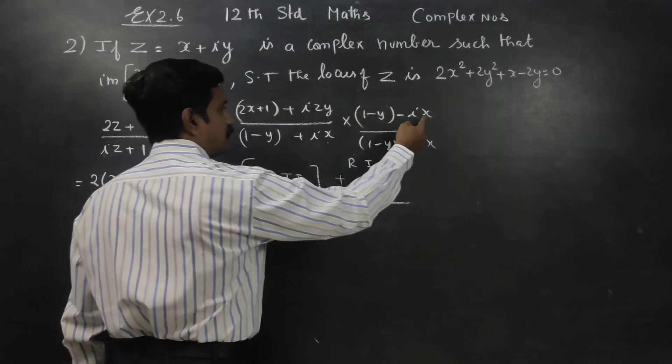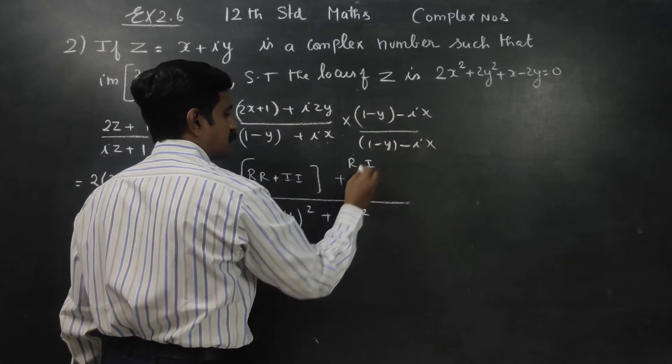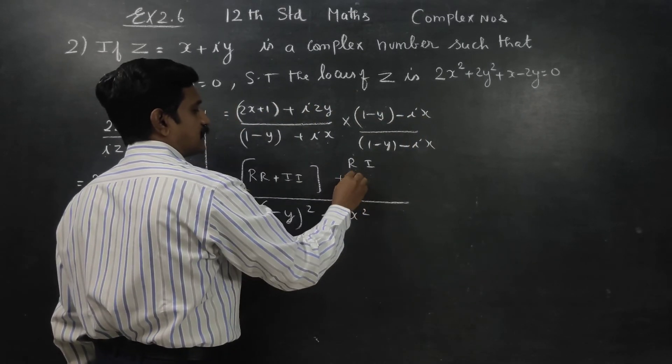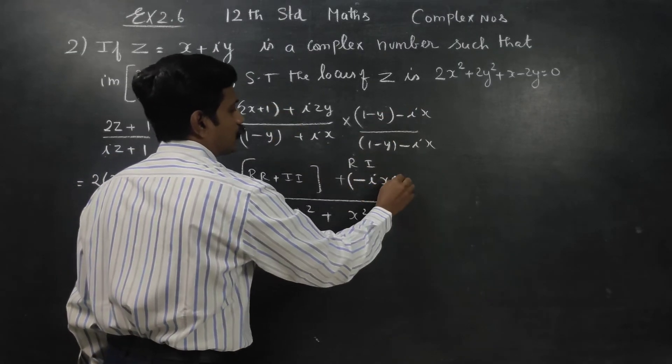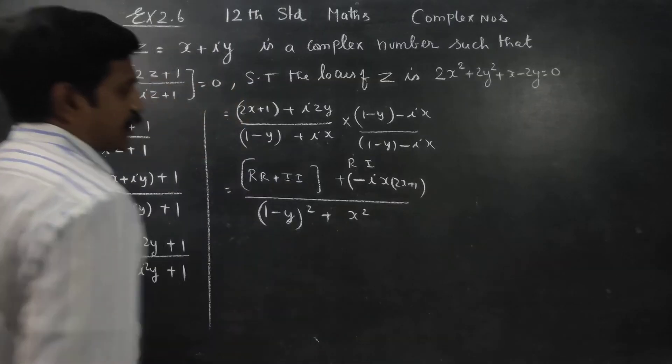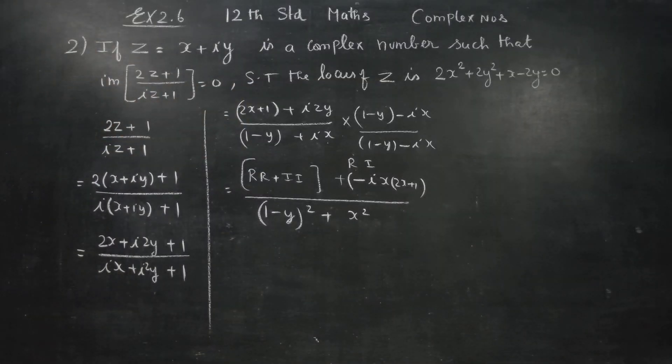Real into imaginary minus minus ix into 2x plus 1, 2x plus 1 real into imaginary.